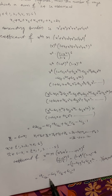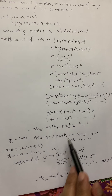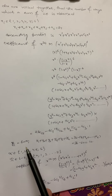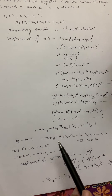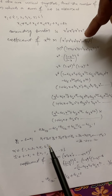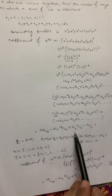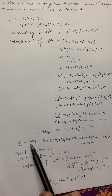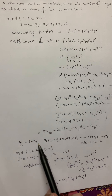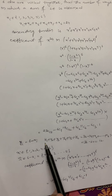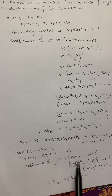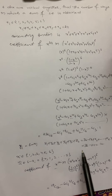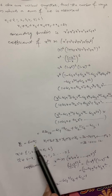Both approaches give the same answer. This method works because 24 is close to the maximum value of 36. When we directly write the generating function, we get a lengthier expansion. By substituting yi = 6 − xi, we simplified the generating function. Whenever the target sum is closer to the maximum value, we can use this kind of approach to reduce computation.